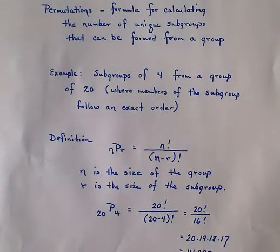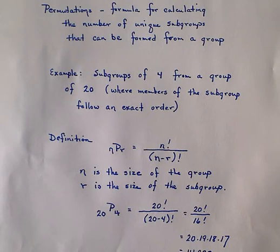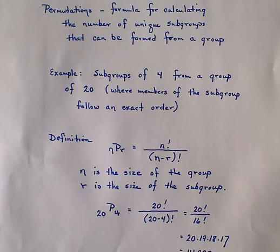As mentioned in the last section, your calculator can do factorials, and it also has an NPR and an NCR button. Because of the way we're doing the teaching here and because of the time constraints, I'm pretty much telling you which ones are permutations and which ones are combinations.